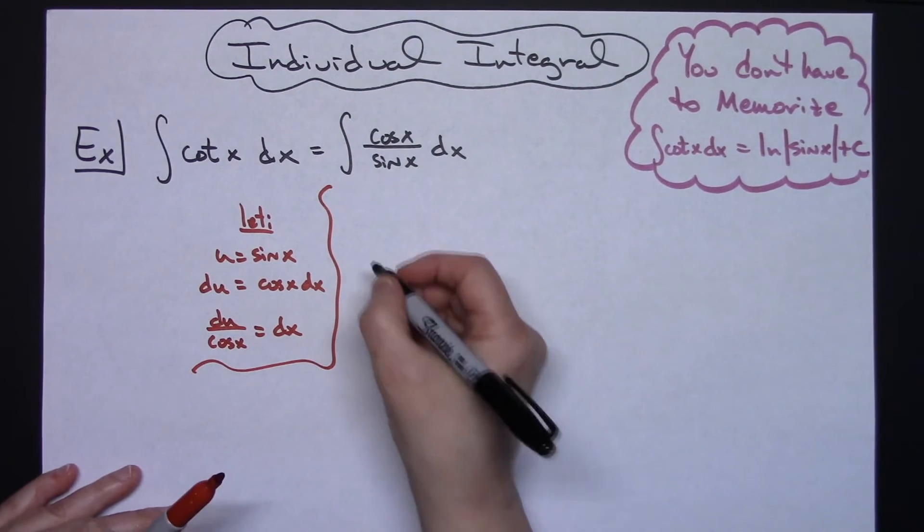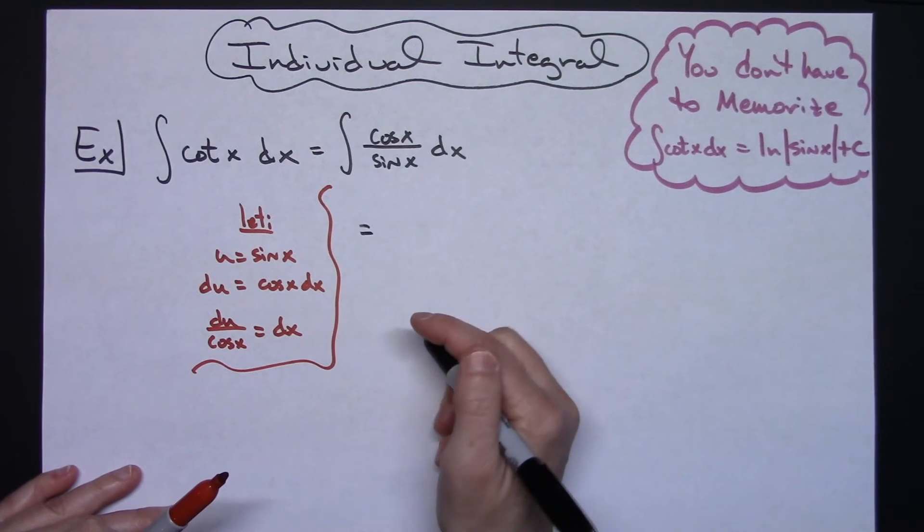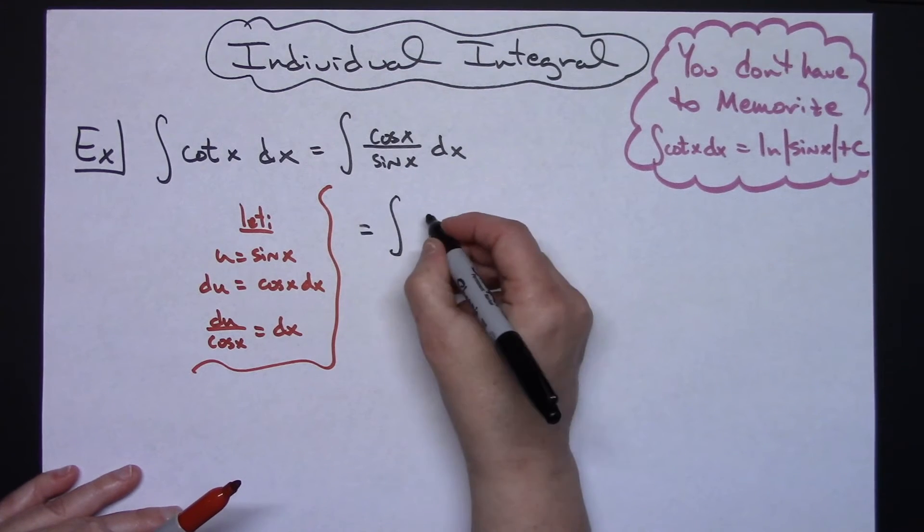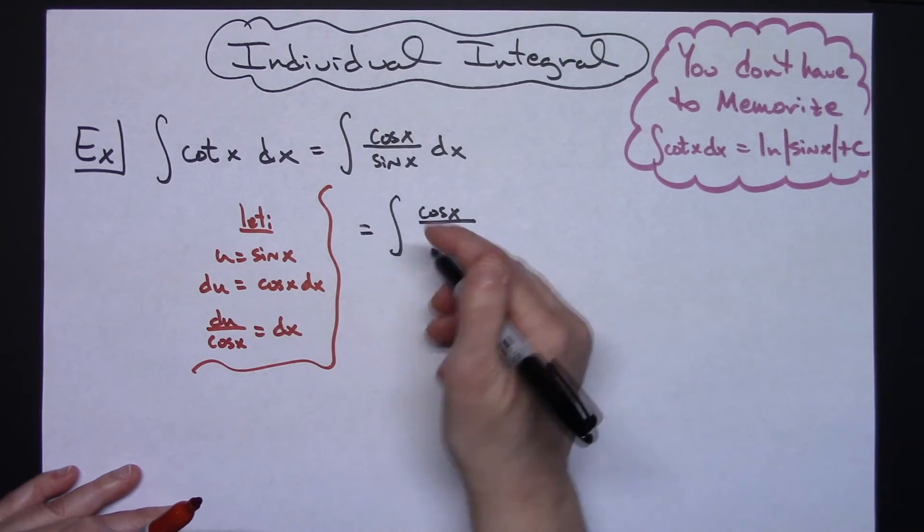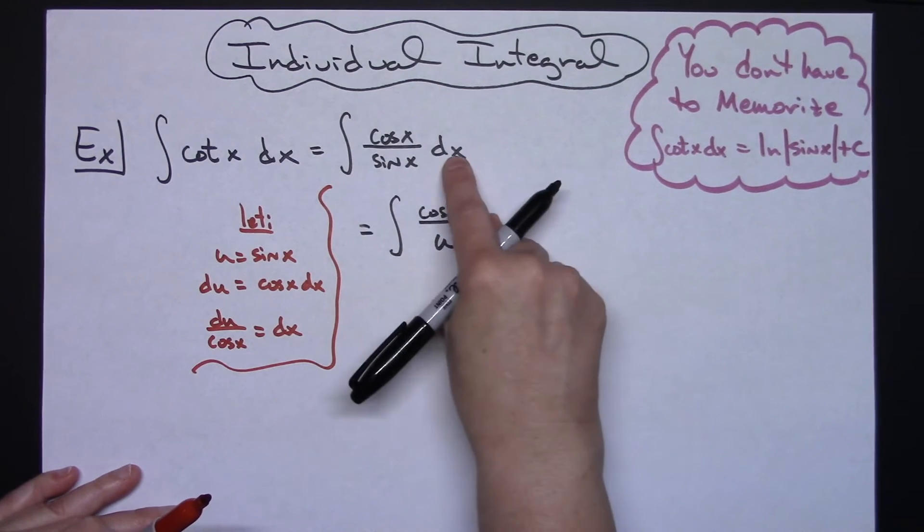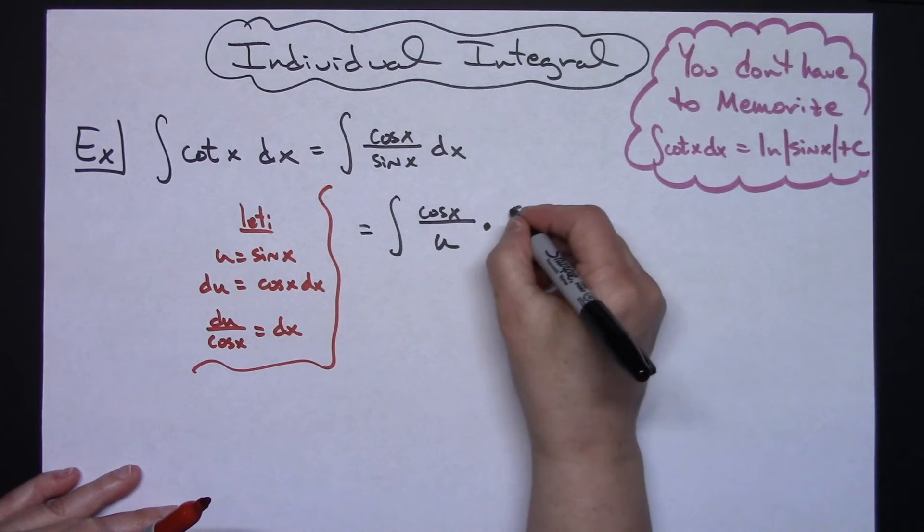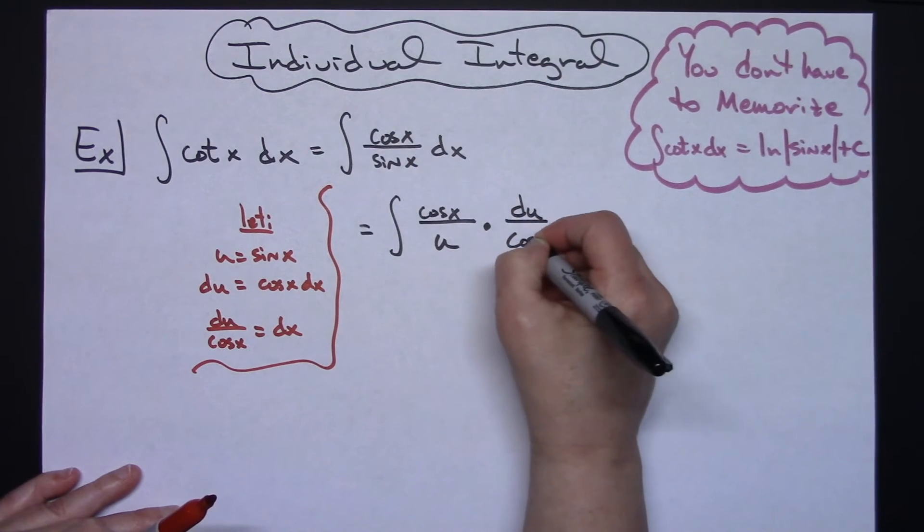After we do that part, then we're going to come back up here and we're going to do some substitutions. We'll have the integral of cosine x over the sine x we'll replace with our u and the dx we will replace with our du over cosine x.